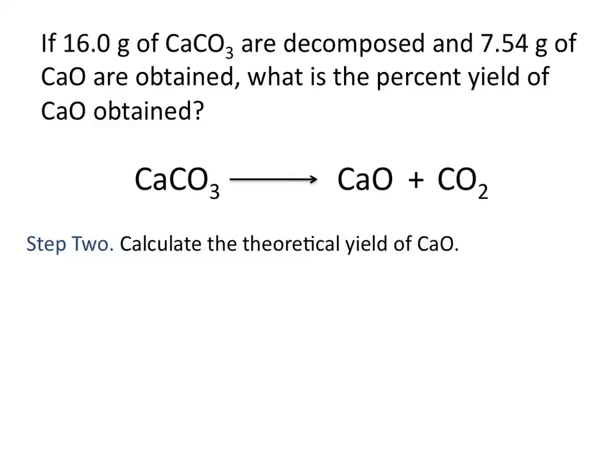For the second step, we need to calculate the theoretical yield of CaO. So like I mentioned previously, 7.54 grams of CaO is our actual yield. And now we'll calculate how much could theoretically be obtained if the reaction was conducted perfectly.